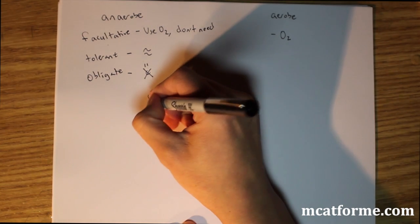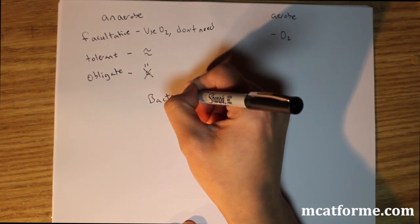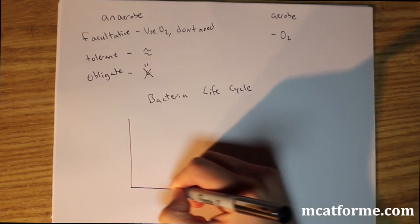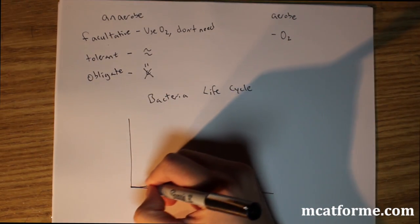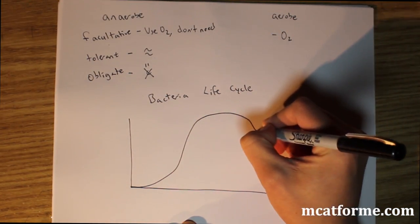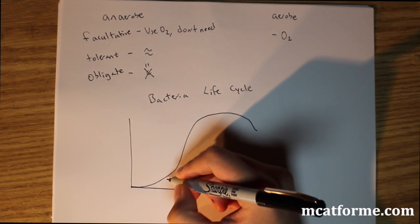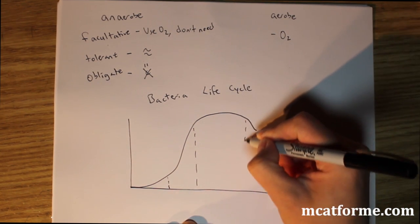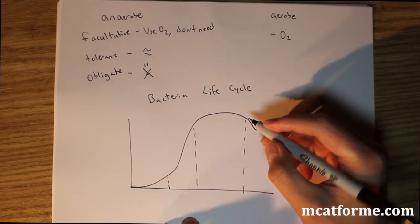So the final thing we're going to look at for basic prokaryotes is bacteria life cycle. So it's pretty simple, but what it looks like is kind of like this. And so it's broken down into four sections. We'll have this section right here, that section, that final section, and that one right there.